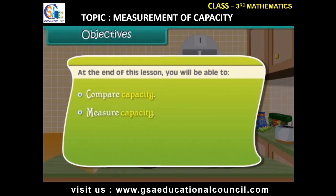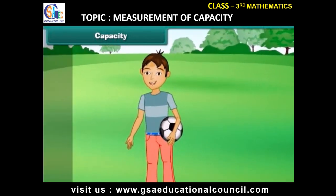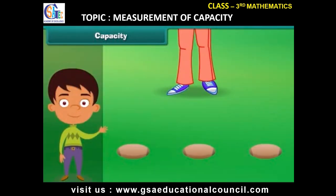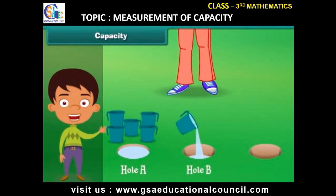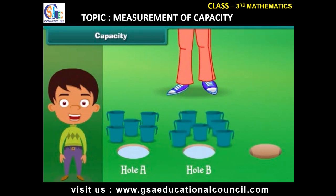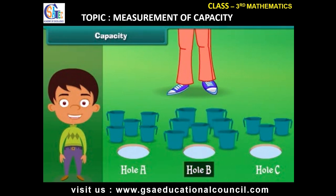Capacity: Rama was playing in the garden. He saw three holes in the playground and decided to fill them with water. Hole A gets filled with five mugs of water, hole B gets filled with seven mugs of water, and hole C gets filled with three mugs of water. Can you tell which is the biggest hole? Yes, hole B is the biggest hole.